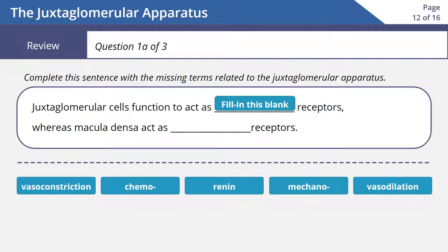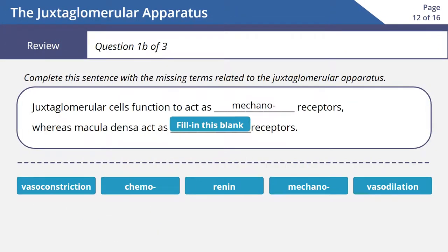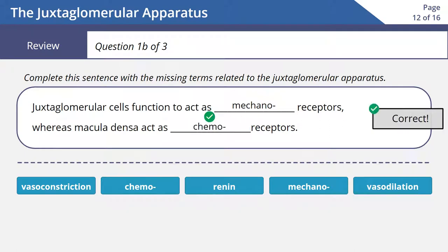Review: Let's complete this sentence with the missing terms. Juxtaglomerular cells function to act as blank receptors, whereas macula densa act as blank receptors. Answer: Juxtaglomerular cells function to act as mechanoreceptors, whereas macula densa act as chemoreceptors.